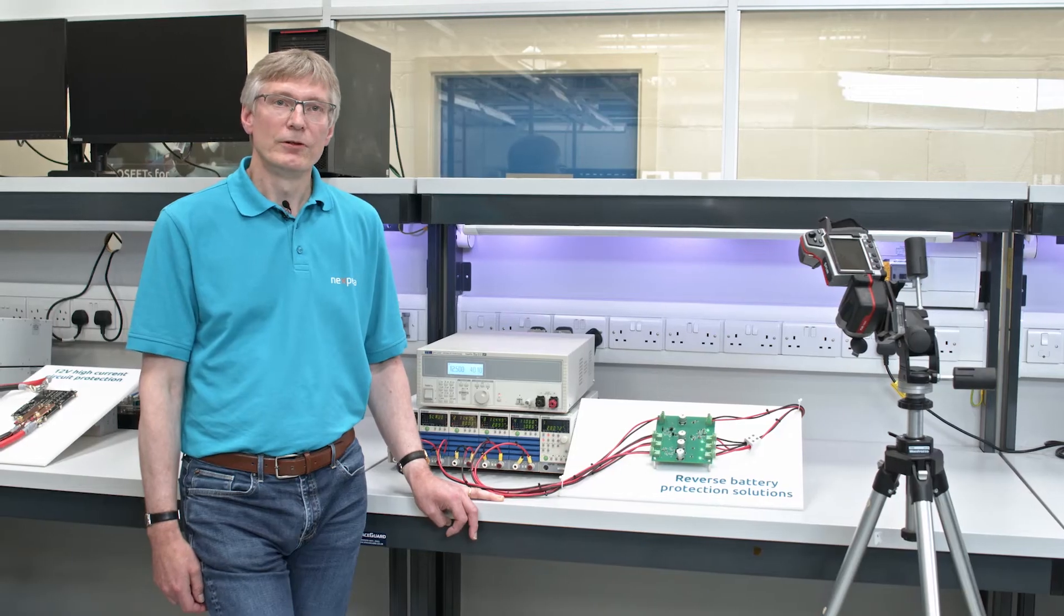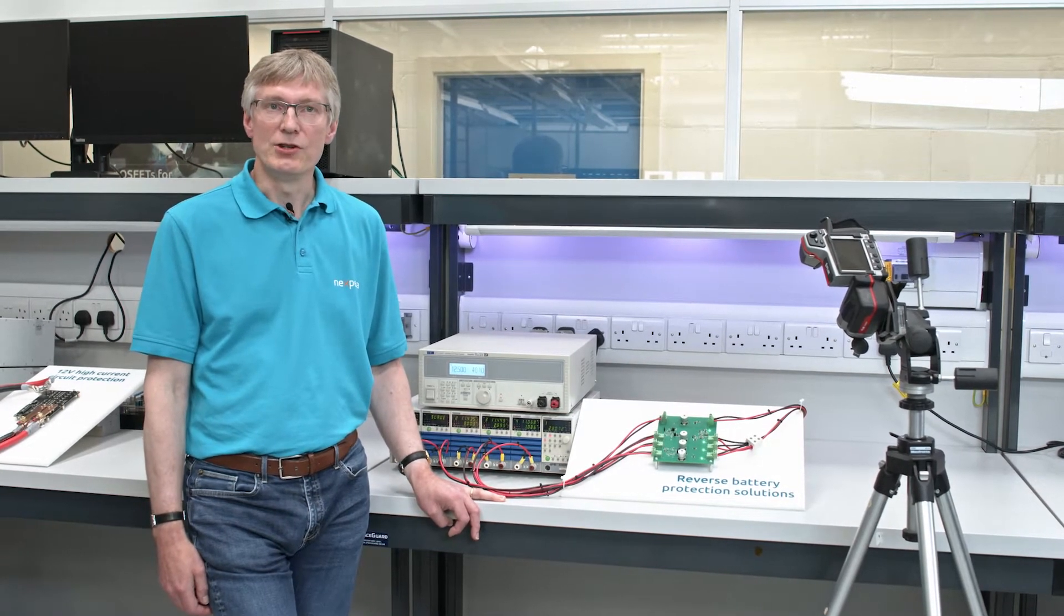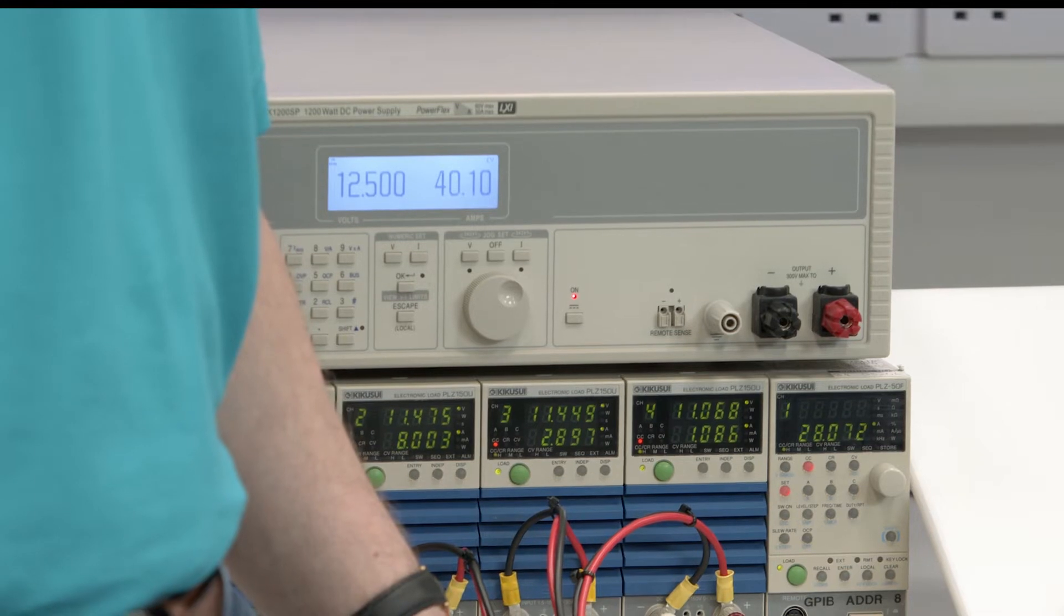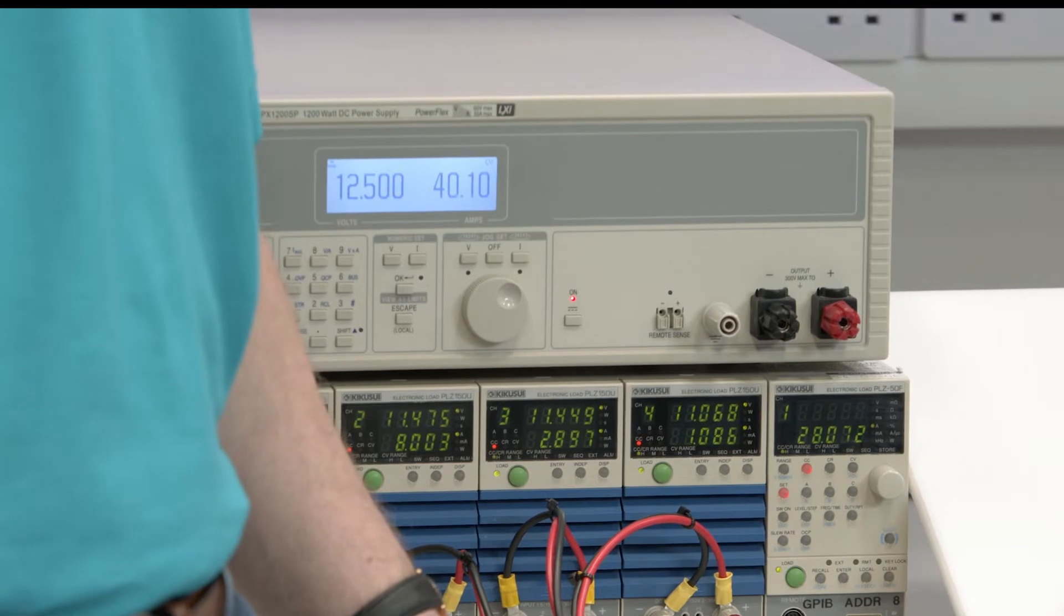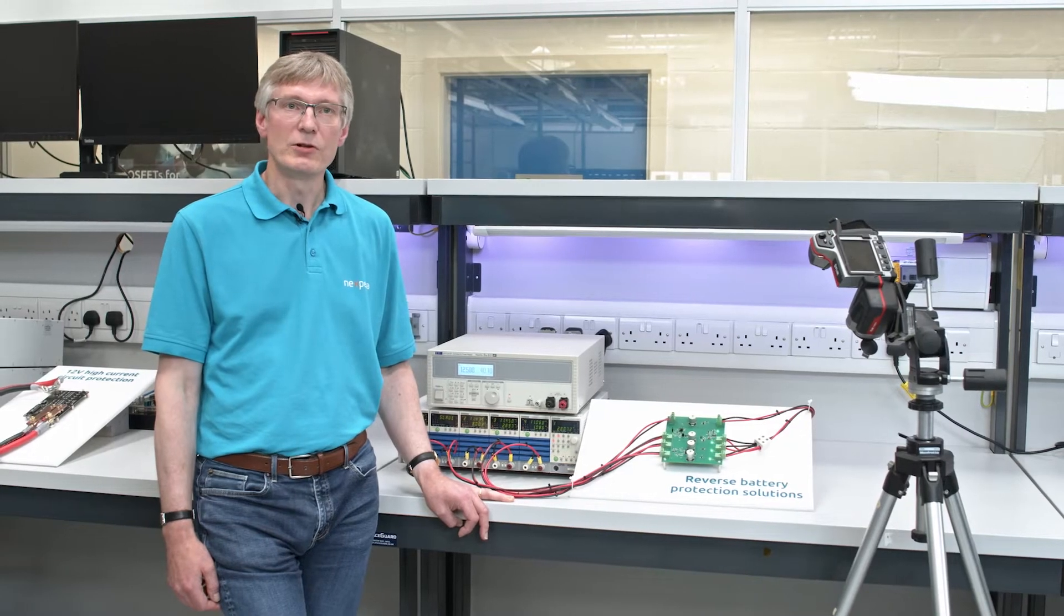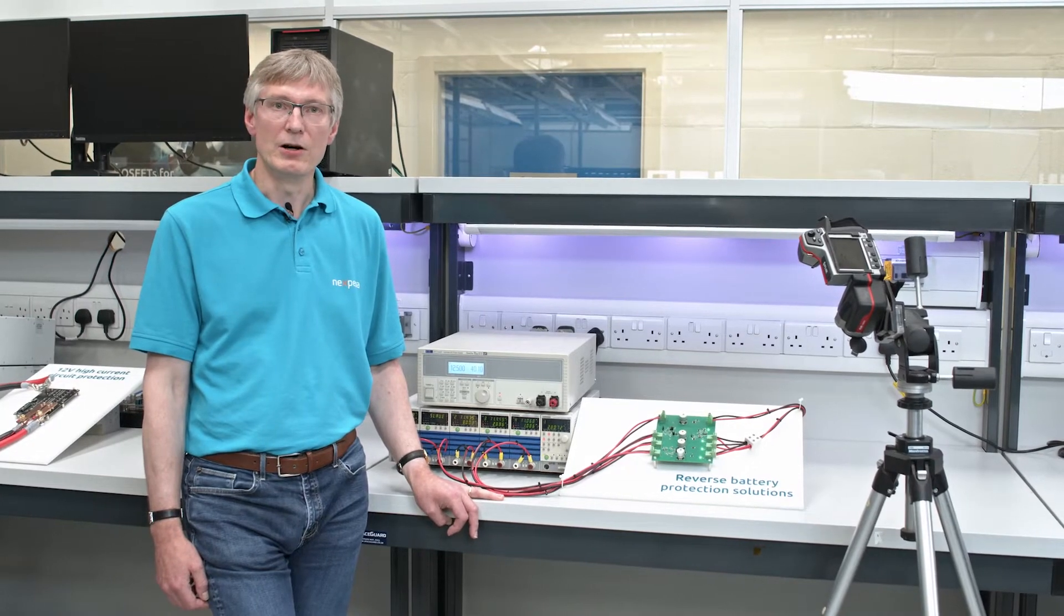The main form of loss in reverse battery protection applications is due to conduction. In a diode the conduction loss equals the forward voltage times by the current flowing through the diode. In the case of a MOSFET the loss equals the current squared times by the RDS on.